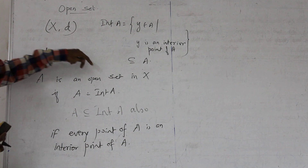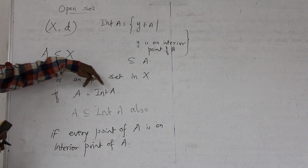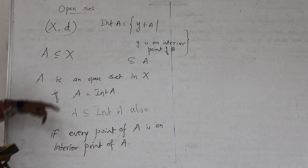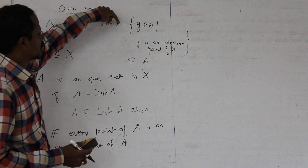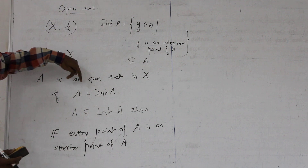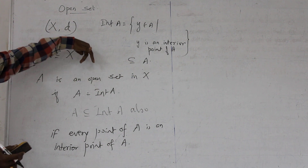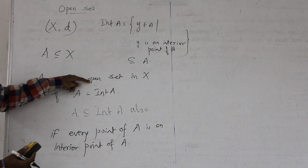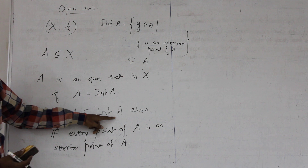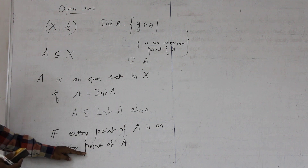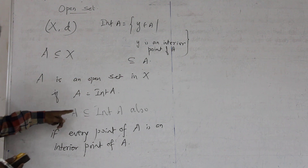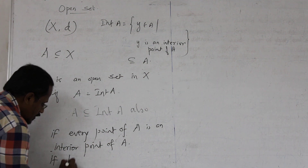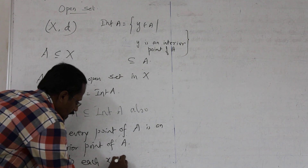To summarize, A is an open set means A = interior(A). Since interior(A) ⊆ A always holds, the additional condition for openness is simply A ⊆ interior(A). So the reformulated definition is: A is an open set in X if A ⊆ interior(A), i.e., every point of A is an interior point of A.